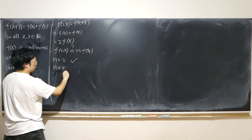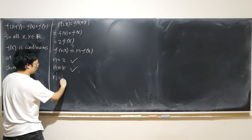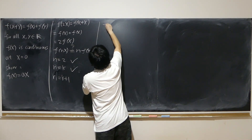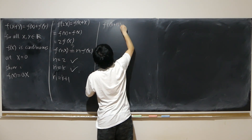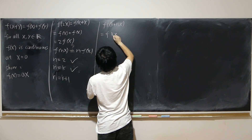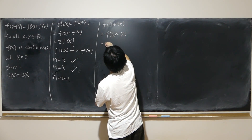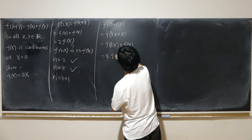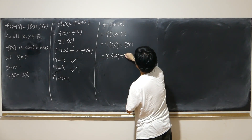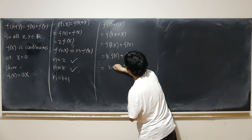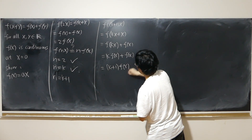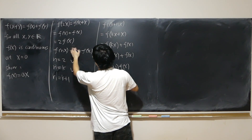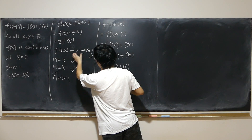We assume it's true for n equal to k, and we want to find out if n equal to k plus 1 is still true — mathematical induction. Now, f of (k+1)x is equal to f of kx plus x, which equals f of kx plus f of x. That equals k times f of x, by the inductive assumption, plus f of x. That is equal to (k+1) times f of x. So this is true for every positive integer n.